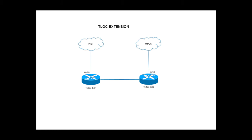In the diagram, BR31 has a single connection to internet transport while BR32 has a connection only to MPLS transport. Both these routers are interconnected to each other. We will use this link to create an extension for the second transport from each of the vEdges. We will create sub-interface 101 on both vEdges and extend the internet connection from VH31 to VH32. Similarly, we will create another sub-interface 102 and extend the MPLS connection from VH32 to VH31.